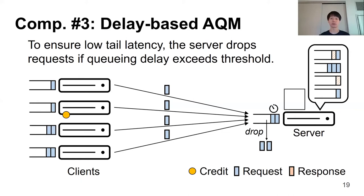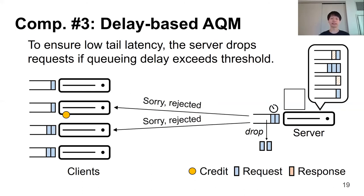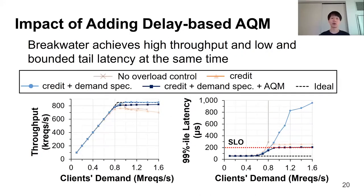In Breakwater, to ensure low tail latency even when incast happens, the server drops requests if the queuing delay exceeds the drop threshold. Because Breakwater uses delay-based AQM as a safety net — dropping requests only when the queue grows large due to incast — it rarely drops requests during normal operation. For dropped requests, the server sends a reject message immediately to notify the clients, which can then decide what to do — for example, retransmit or give up the request.